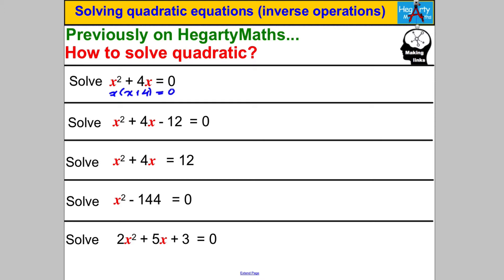That gives you X is 4 or X is negative 4. In the next one there is a number term — you're looking for two numbers that multiply to negative 12 and add to 4. Factorizing gives you X is negative 6 and X is positive 2.